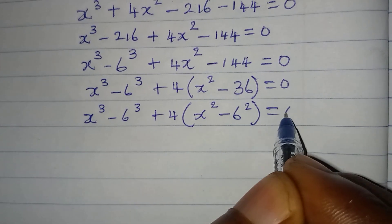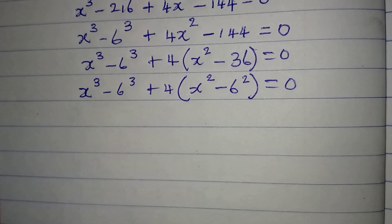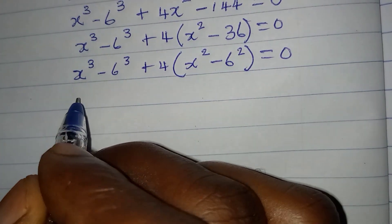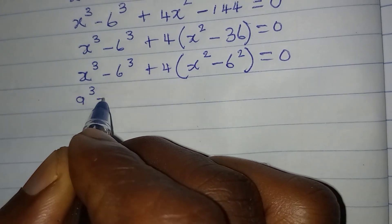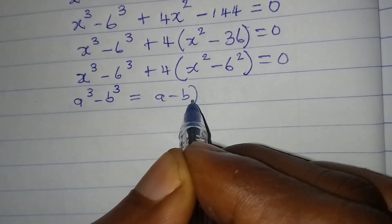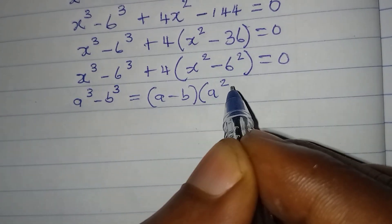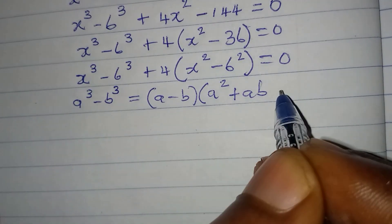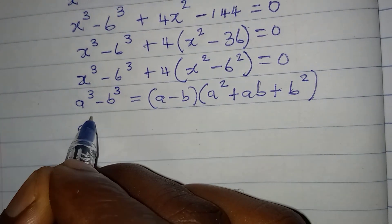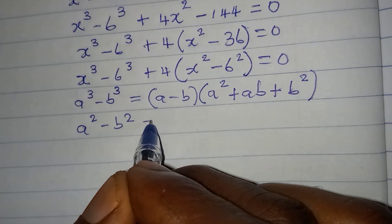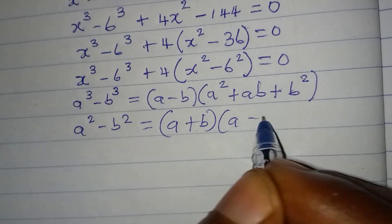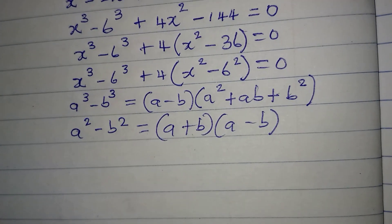Now let's apply some standard identities. For the difference of cubes: a to the power of 3 minus b to the power of 3 equals a minus b, times a squared plus ab plus b squared. And for the difference of two squares: a squared minus b squared equals a plus b times a minus b.